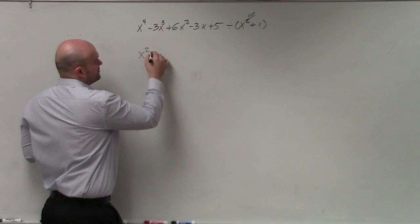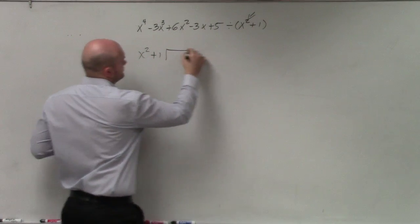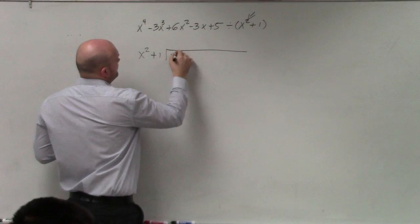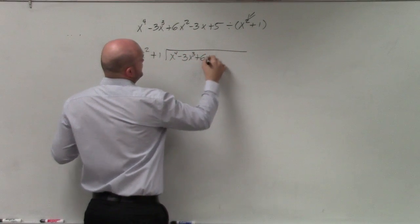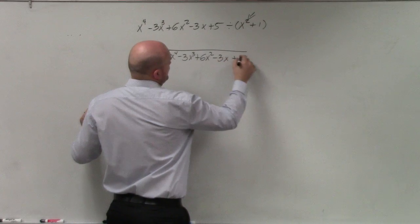So therefore, I'm just going to set up my long division algorithm. And I have x to the fourth minus 3x cubed plus 6x squared minus 3x plus 5.